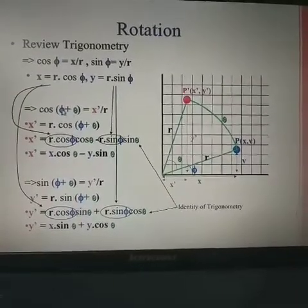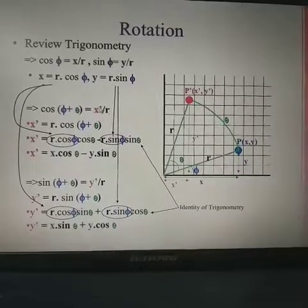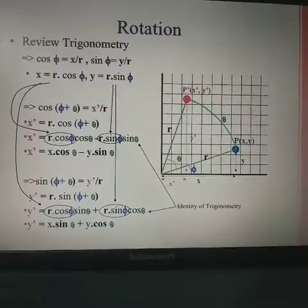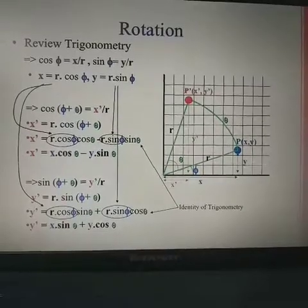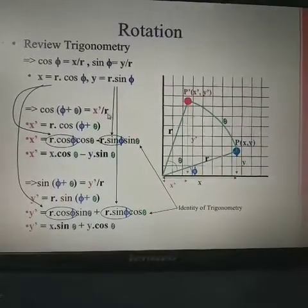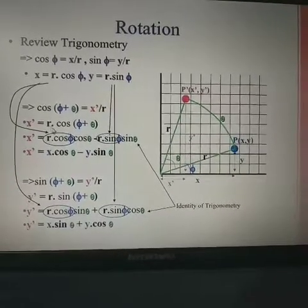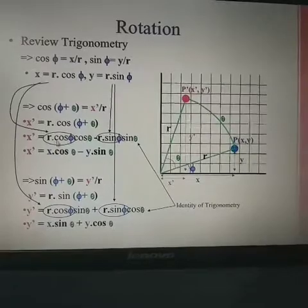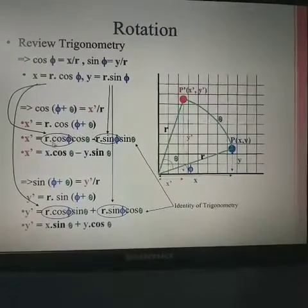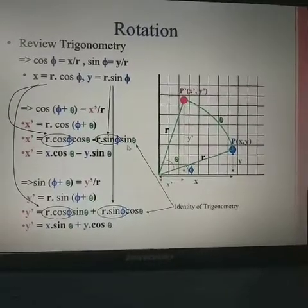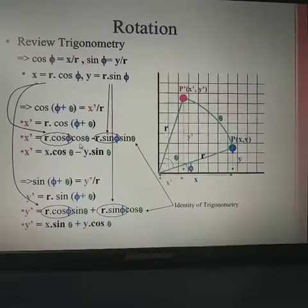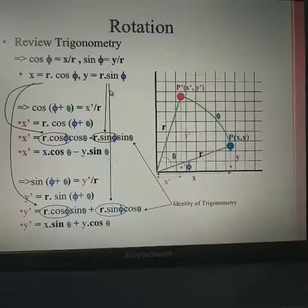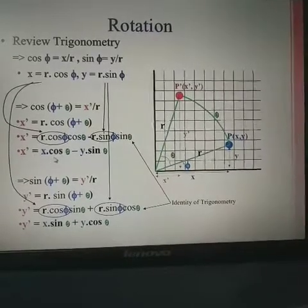For the new x-coordinate: cos(phi + theta) equals x-new divided by r, so x-new equals r·cos(phi + theta). Expanding using the trigonometric identity: cos(phi + theta) = cos(phi)·cos(theta) − sin(phi)·sin(theta). Multiplying through by r: x-new = r·cos(phi)·cos(theta) − r·sin(phi)·sin(theta). Substituting r·cos(phi) = x and r·sin(phi) = y gives: x-new = x·cos(theta) − y·sin(theta).